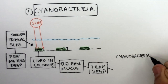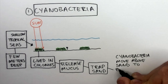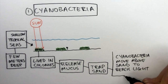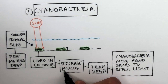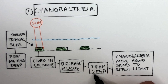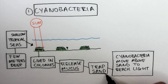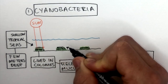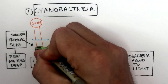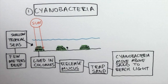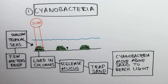Therefore, the cyanobacteria move above the sand to reach the sunlight so they can photosynthesize. This process repeats itself over and over again: the mucus gets released, which then traps sand, which then blocks the sunlight, so the cyanobacteria has to move above the sand again in order to reach the sunlight. As this repeats itself over and over again, it creates layers in the stromatolites.